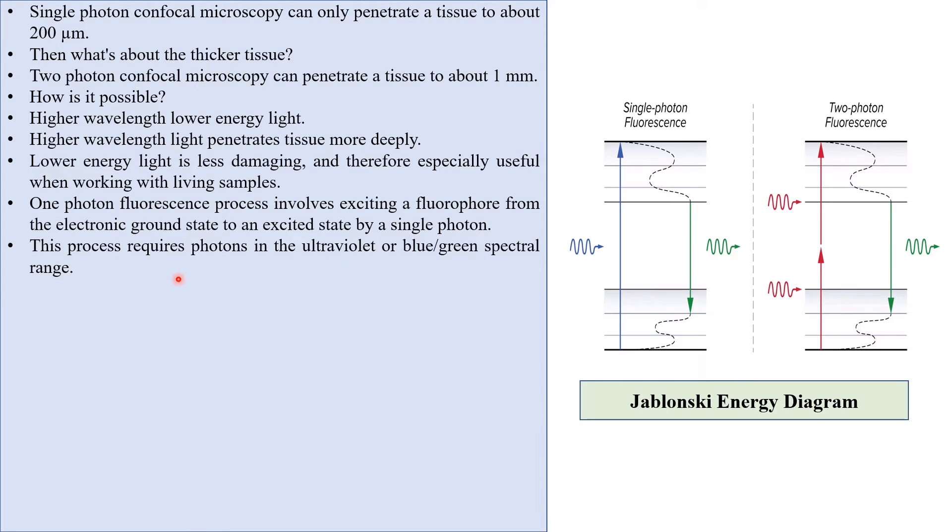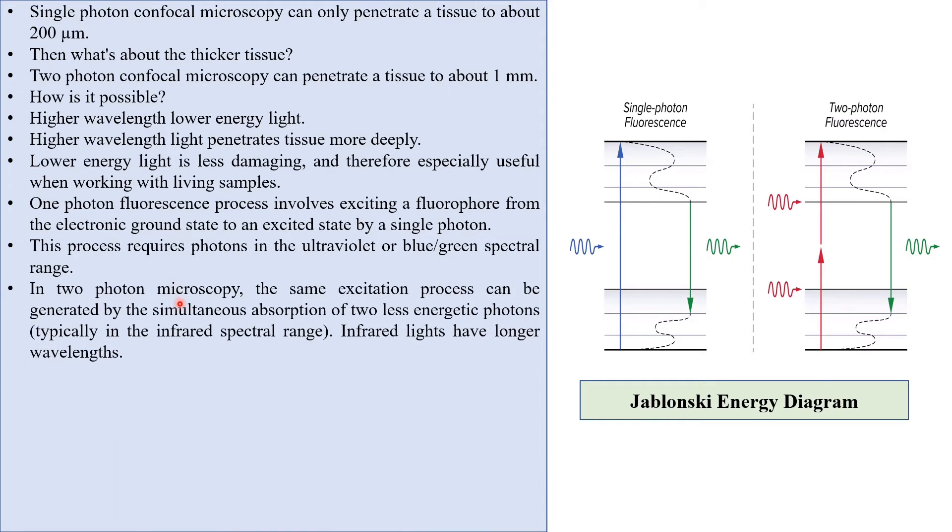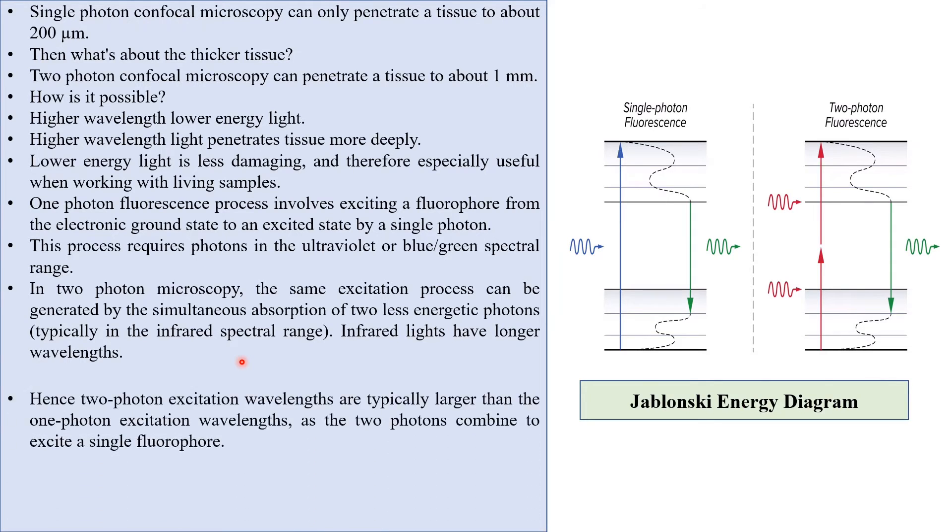This process requires photons in the ultraviolet or blue-green spectral range. In two photon microscopy, the same excitation process can be generated by the simultaneous absorption of two less energy photons, typically in the infrared spectral range.